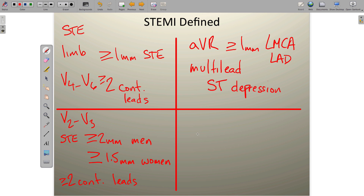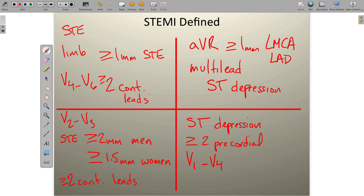Last, we look for ST-segment depression in greater than or equal to two precordial leads in the range of V1 through V4. This pattern tells us about posterior wall changes.